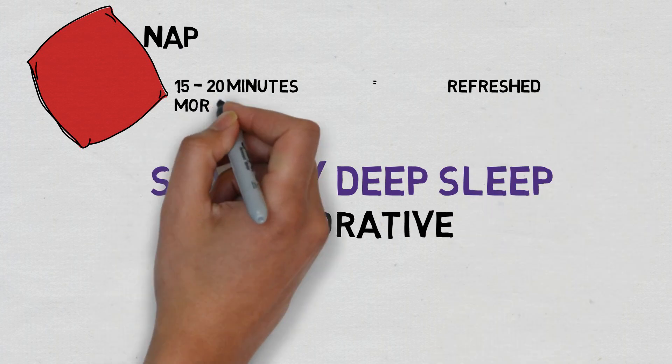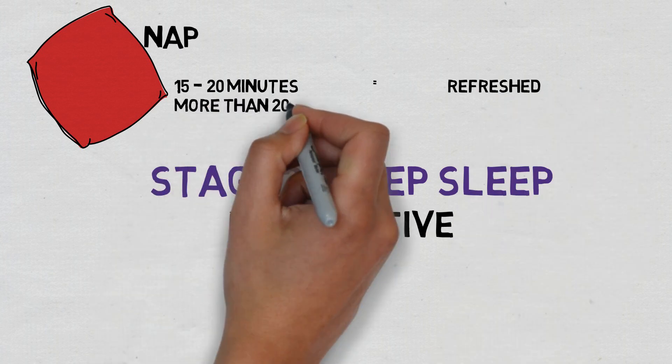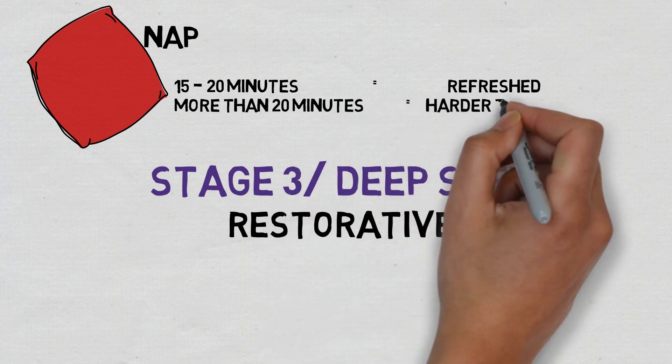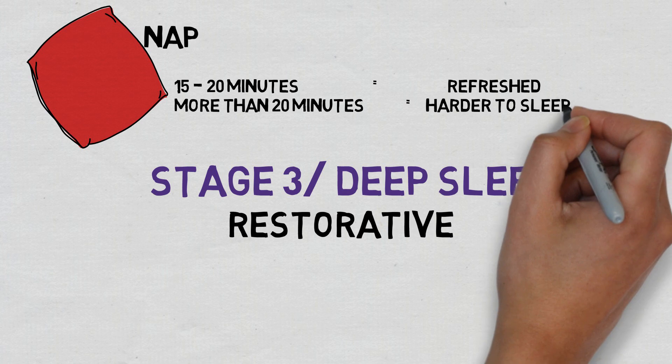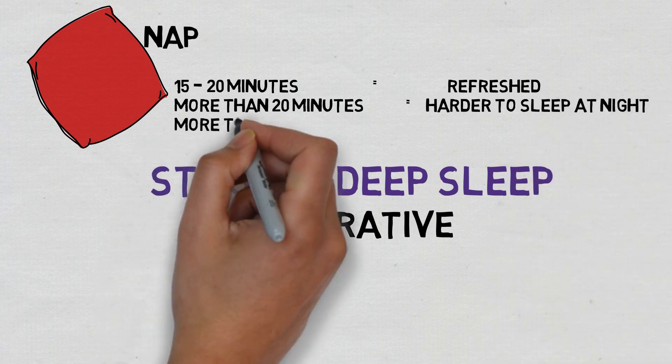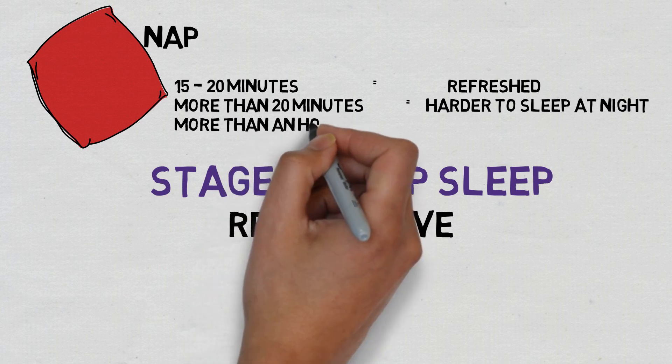Because if you nap too long, you may end up falling into deep sleep, stage three sleep. So this will make it more difficult for you to then fall asleep, say at night, because this kind of deep sleep during your nap will actually reduce your sleep debt. And so you'll need less sleep when actual time to sleep in the night comes.